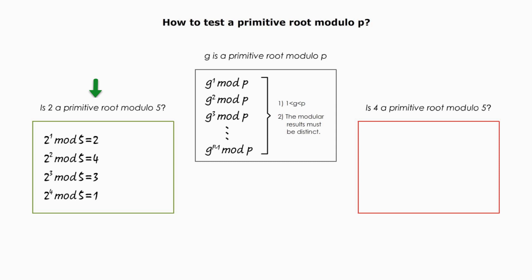You get the idea. Let me test. 2 is a primitive root modular 5. 2 bigger than 1, less than 5. The first condition is met. It's okay.